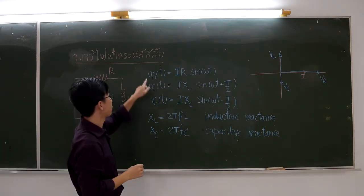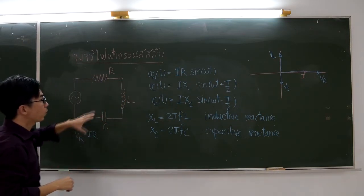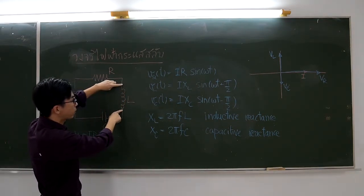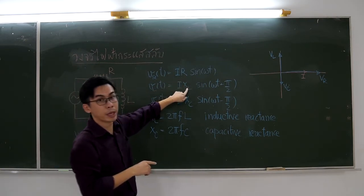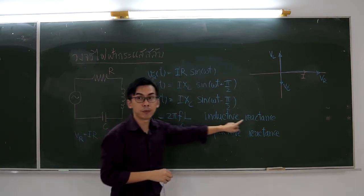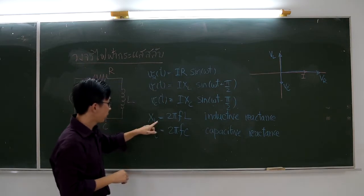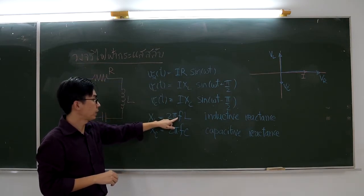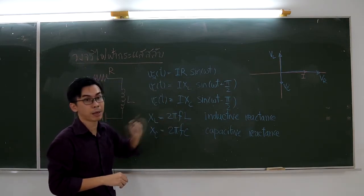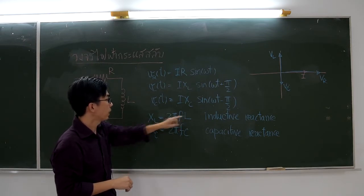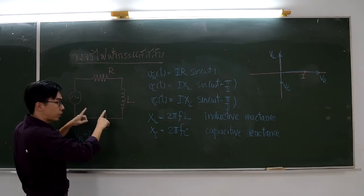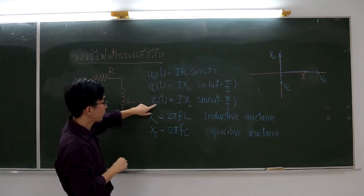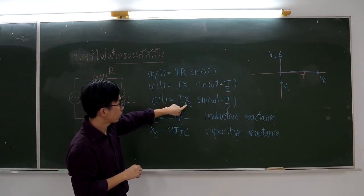Also, for VL, it is equal to I times XL, where XL is called inductive reactance. And this inductive reactance is equal to 2π times frequency times L, which is the inductance of the inductor.